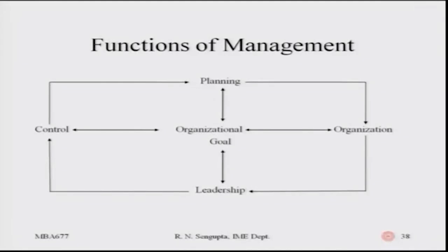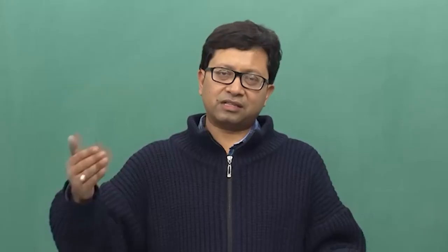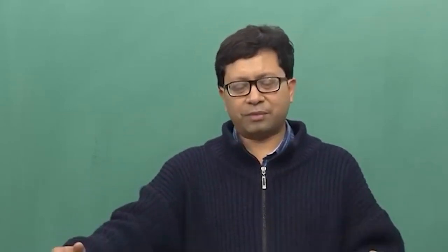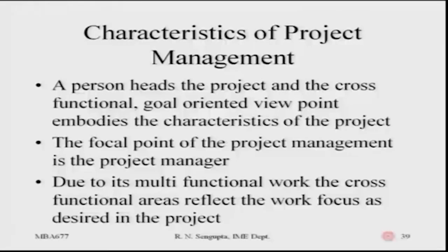If you see the chart, it basically shows the organization's goals. The organization gives its feedback to meet the organizational goal, and you have planning, control, and leadership. These four sub-heads - planning, organization, leadership, and control - should be done in such a way that they are independent of each other but at the same time positively influence each other, so the overall benefit for the organization goal based on which the project was planned gives the maximum benefit. Characteristics of project management: generally a person heads the project, the work is cross-functional and goal-oriented.